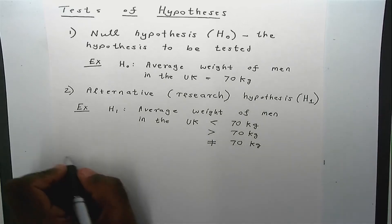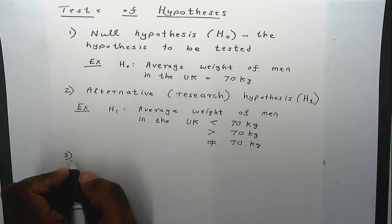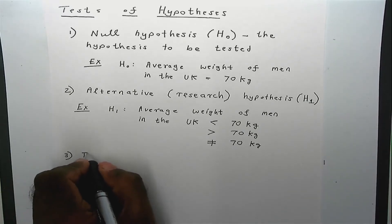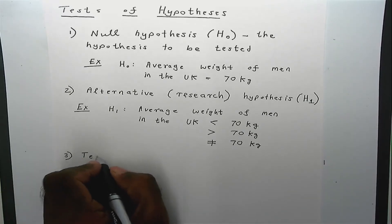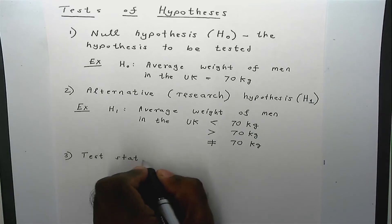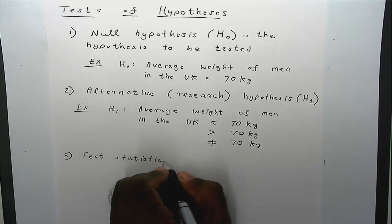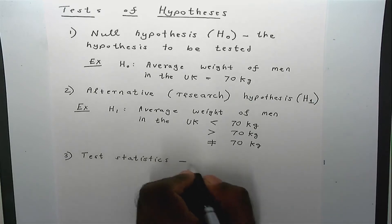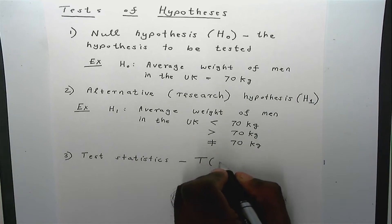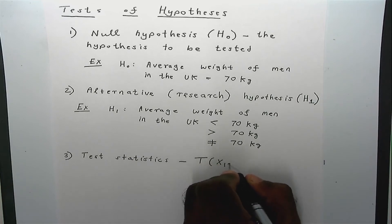The third element of a test of hypothesis is known as the test statistic. It is usually denoted by capital T and is a function of the data that you have.